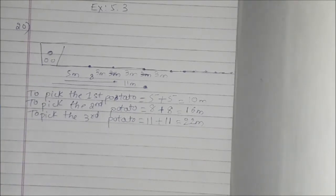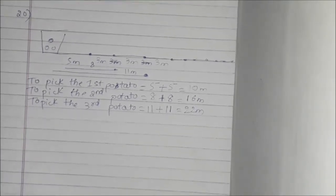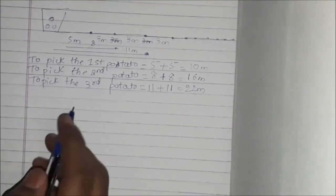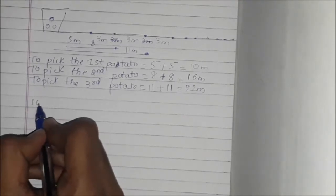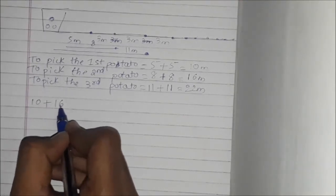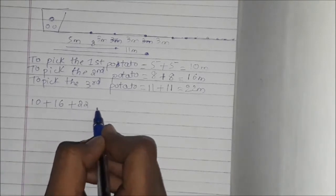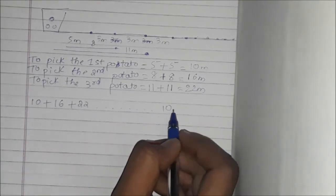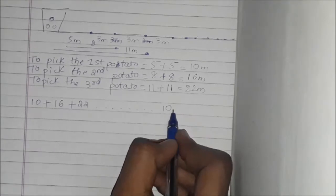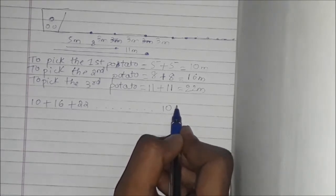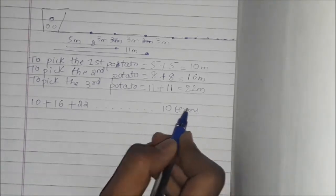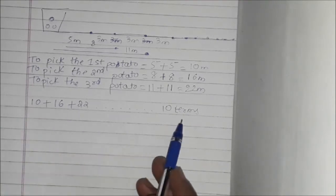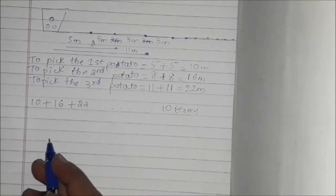We need to find the total distance run by her to complete the game — collecting all 10 potatoes. The distances form a pattern: 10 for the first potato, 16 for the second, 22 for the third — this is an arithmetic progression up to 10 terms. We find the summation of this series to get the answer.